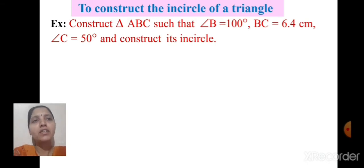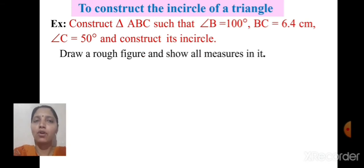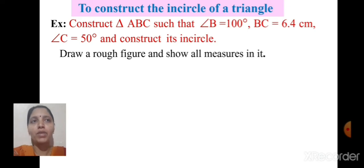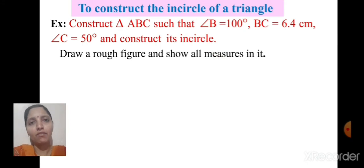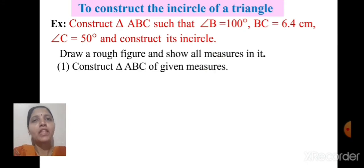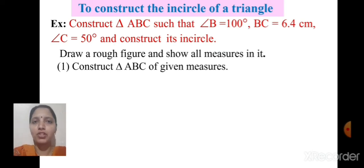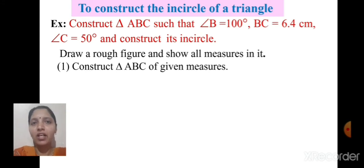So let's see the steps you have to follow. First you have to draw a rough figure and show all measures in it — whatever measures are given, all these you have to mention in the rough figure. Then the first step for the fair figure: construct triangle ABC of given measures. To draw the incircle, first we have to construct the triangle.